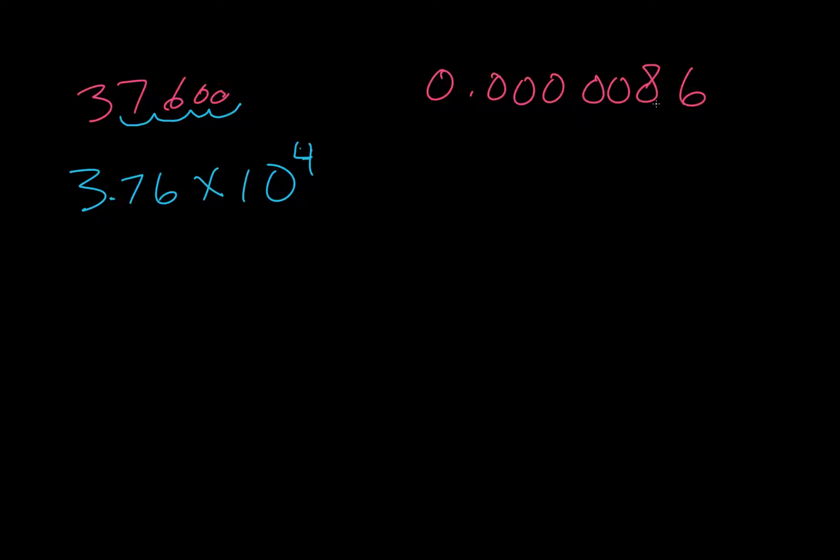This one will work a little bit different. So we're just going to get 8.6 from this times ten, and then we move one, two, three, four, five, six to get to that spot. It's a negative six, however, because 8.6 is larger, so we need to reduce it to get it down to that number.